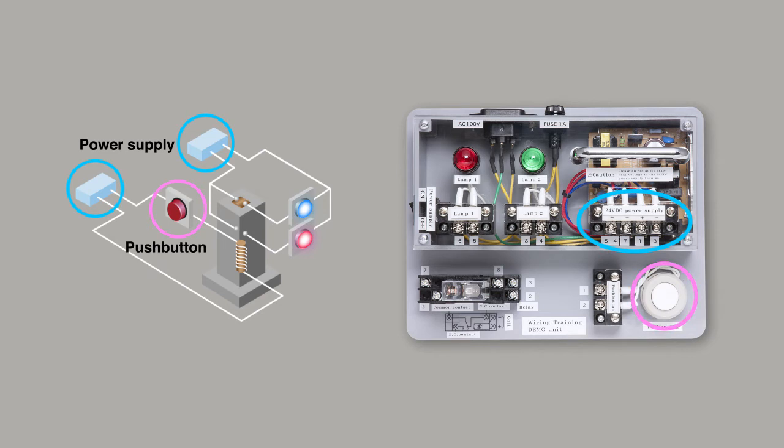The wiring training demo unit has a power supply, push button, blue light, red light, and relay, just like the electrical schematic diagram.